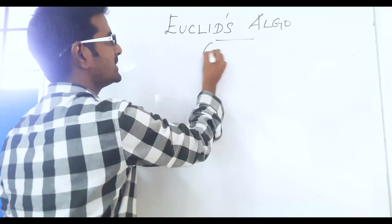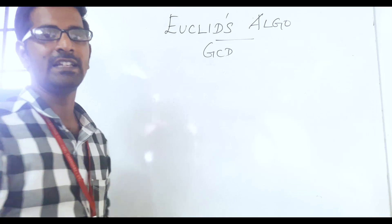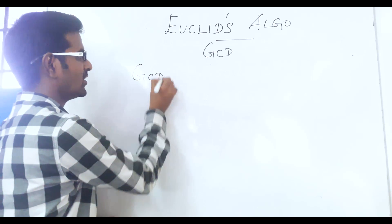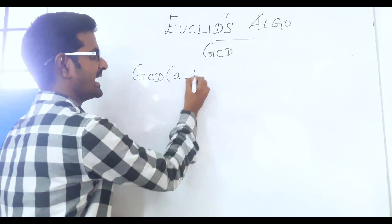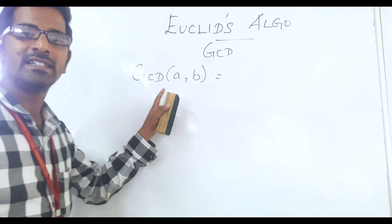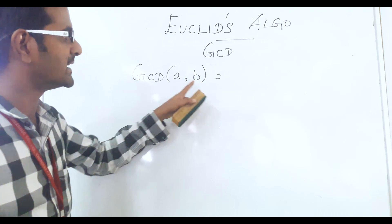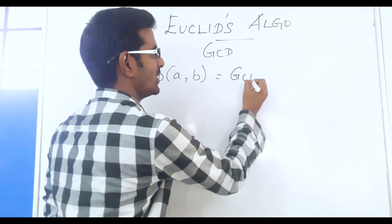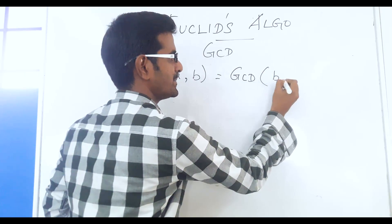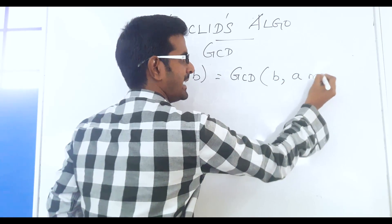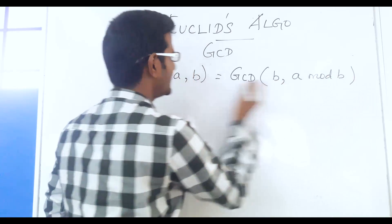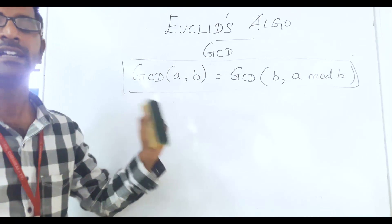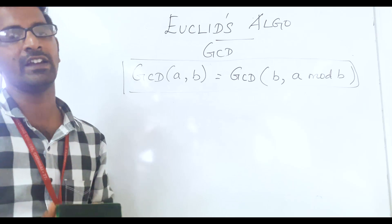Euclid's algorithm is for calculating the GCD of two given numbers. The formula is: GCD of two numbers A and B can be simplified as GCD of B, A mod B. If we are aware of this formula, it is very easy to calculate the GCD of two given numbers.